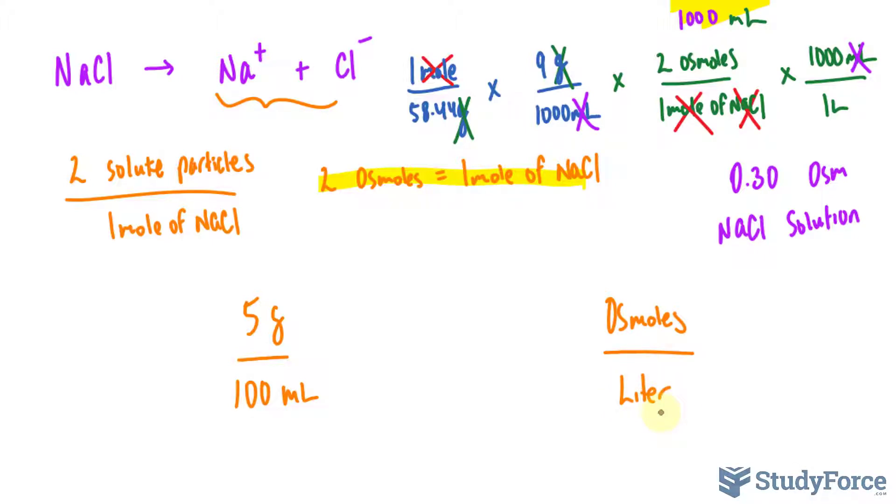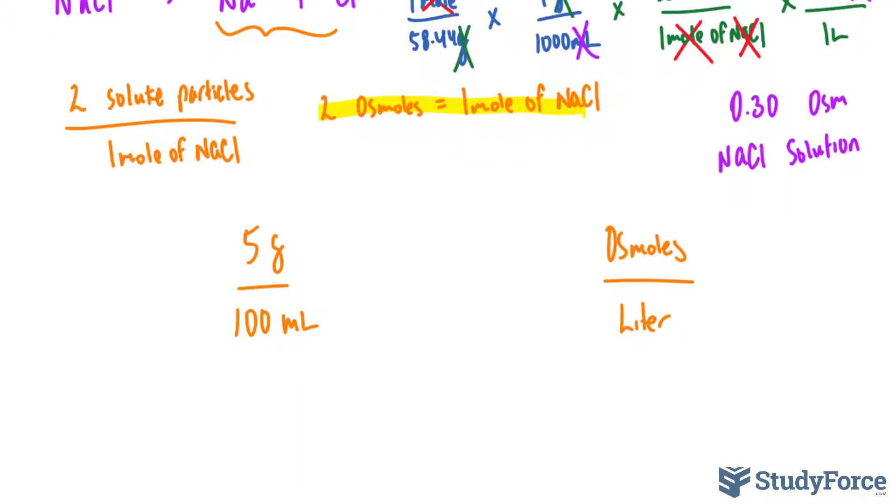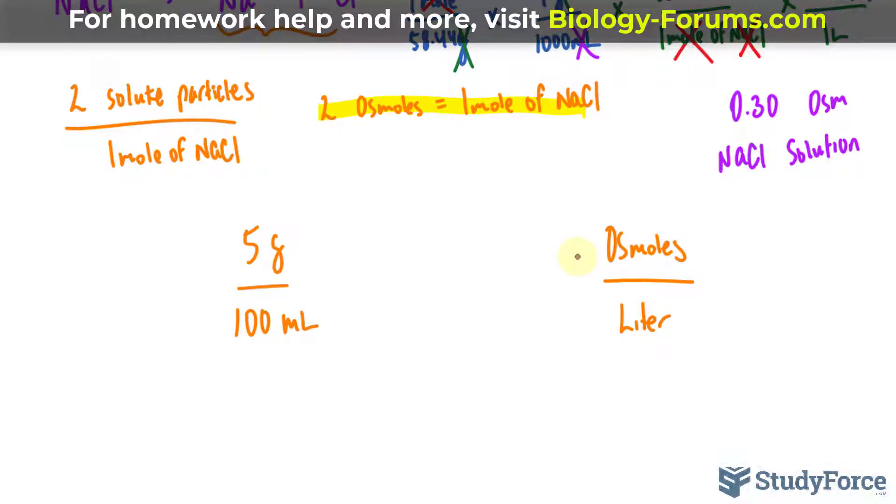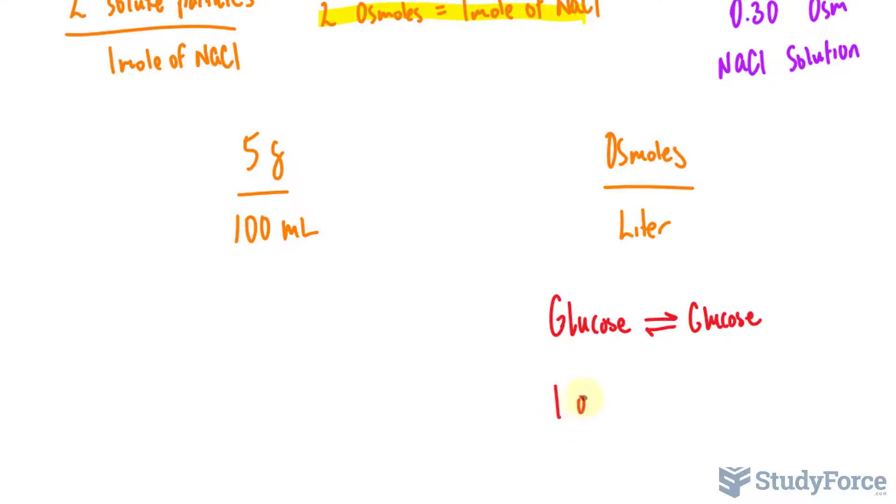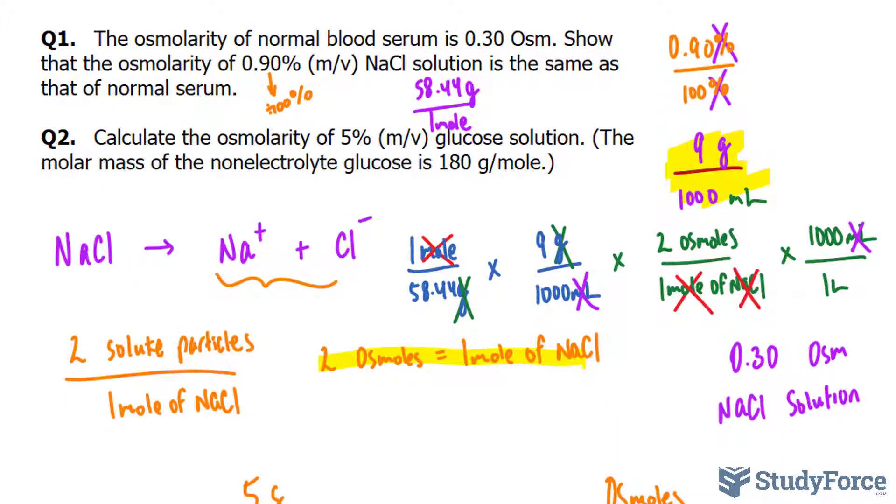So we need to convert 5 grams over 100 milliliters somehow so that we get osmoles per liter. We also learned back in question number 1 that osmoles is the amount of solutes produced during the dissociation of the compound. The good thing about this question is that glucose does not dissociate in water. So for every glucose molecule that goes in, there's no dissociation, you get a glucose molecule. This is a lot different than what we had in question number 1 where sodium chloride dissociated into sodium and chloride ions.